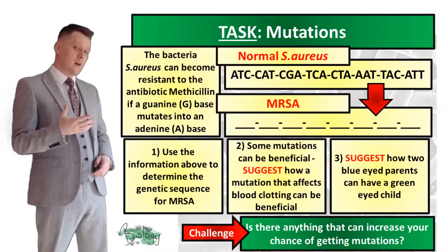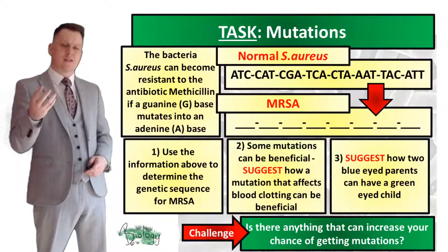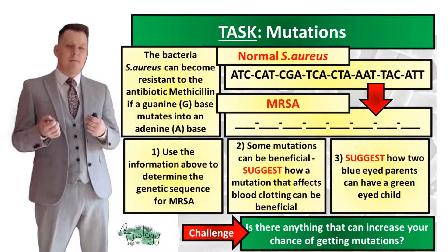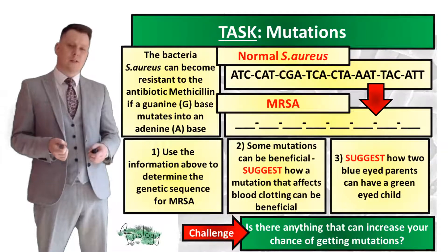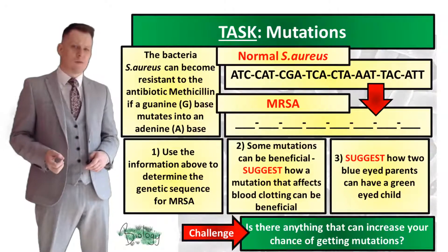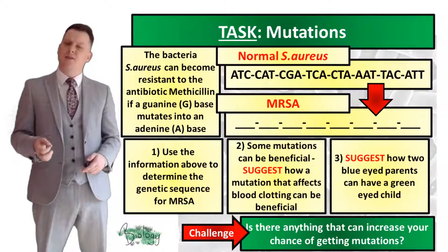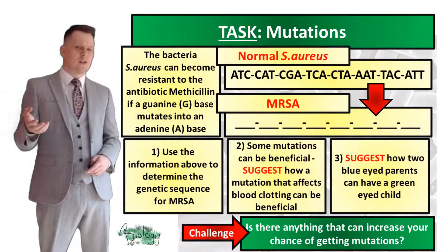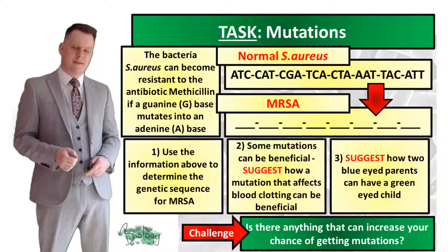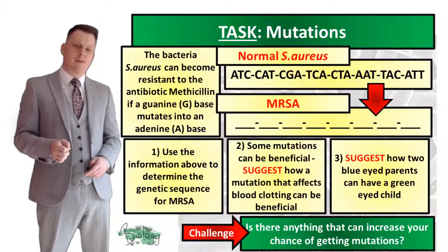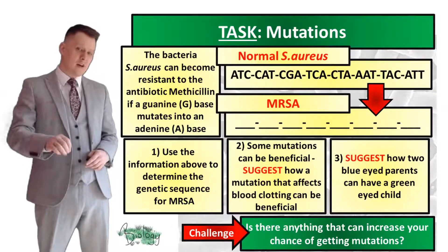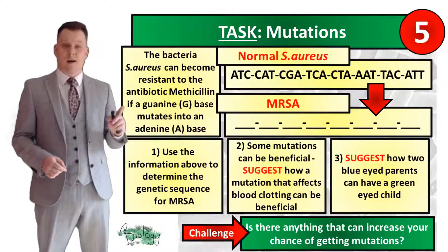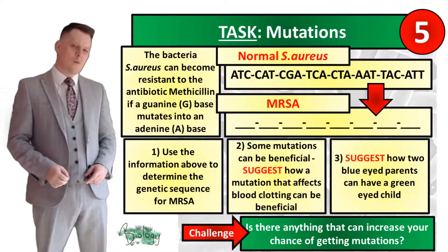For the next task: the bacteria Staphylococcus aureus can become resistant to the antibiotic methicillin if a guanine base mutates into an adenine base — creating methicillin-resistant Staphylococcus aureus, commonly called MRSA, one of our hospital superbugs. Use this information to determine the genetic sequence for MRSA. Also suggest how a mutation affecting blood clotting can be beneficial, and how two blue-eyed parents can have a green-eyed child. As a challenge, identify what can increase your chances of getting a mutation.